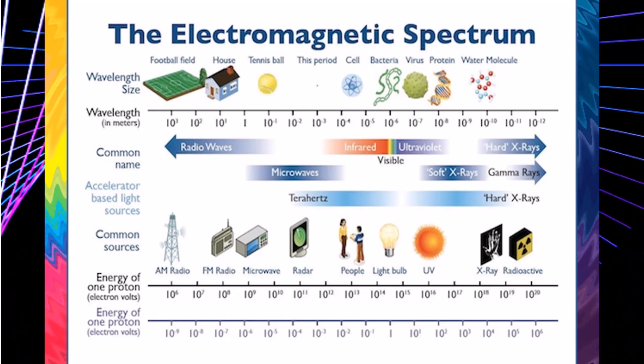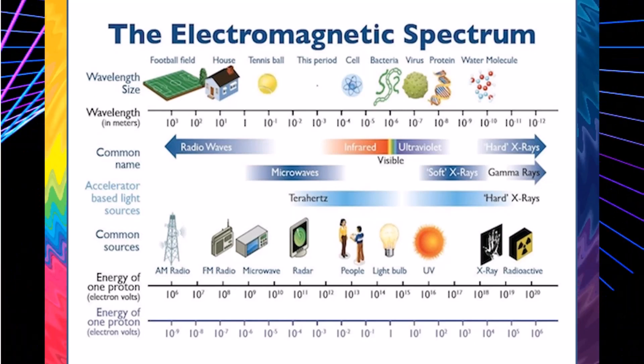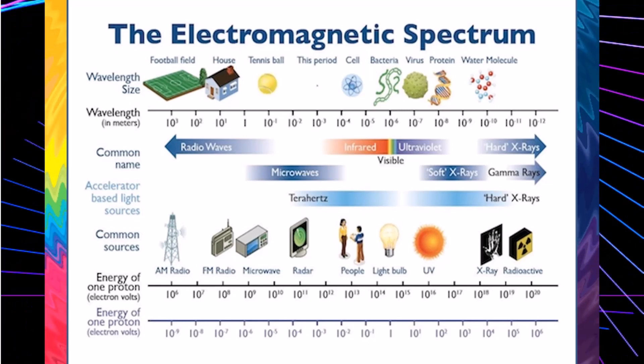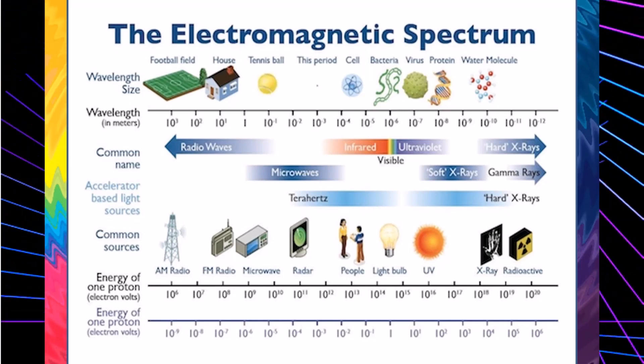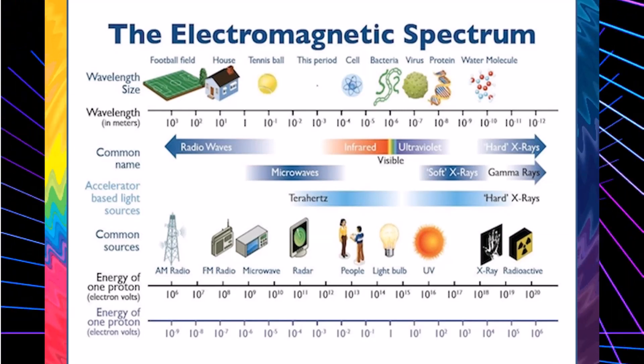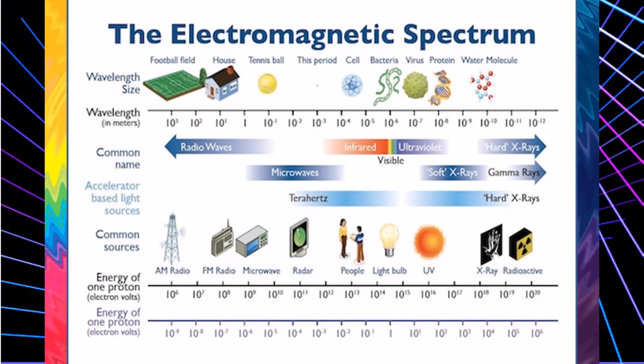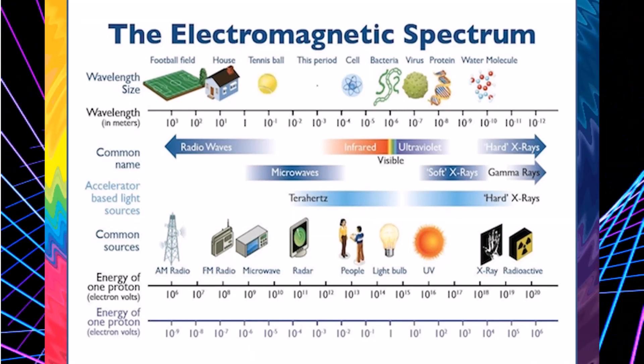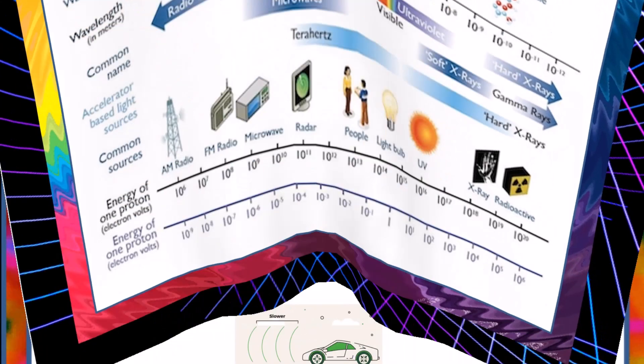Radio waves have the lowest energy and frequency and the longest wavelength. Gamma rays have the highest energy and frequency and the shortest wavelength. All electromagnetic waves move at the speed of light, including light itself. In fact, physicists often use the word light to refer to any kind of electromagnetic wave, even ones we can't see with our eyes.